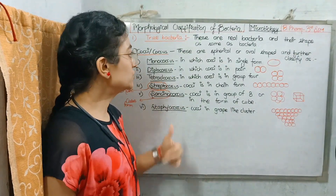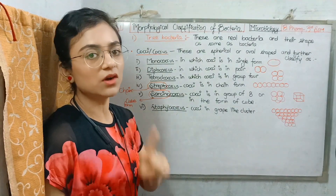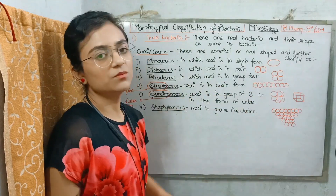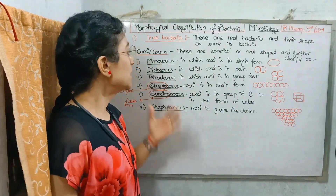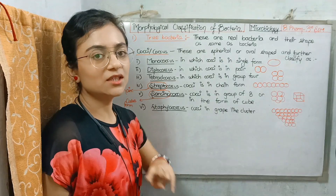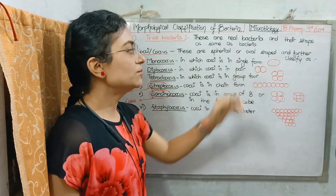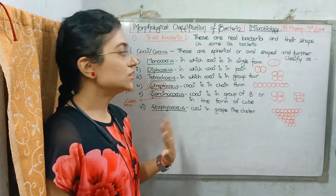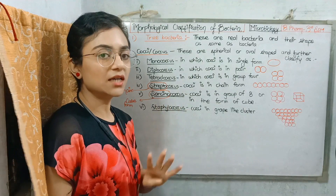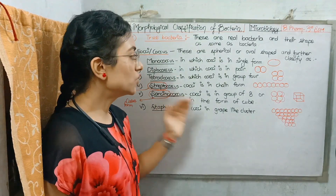First is Monococcus — only one coccus, it is single. Second, Diplococcus — two cocci together. Third is Tetracoccus — tetra means 4, so these are four cocci grouped together. They are arranged living in groups of four.